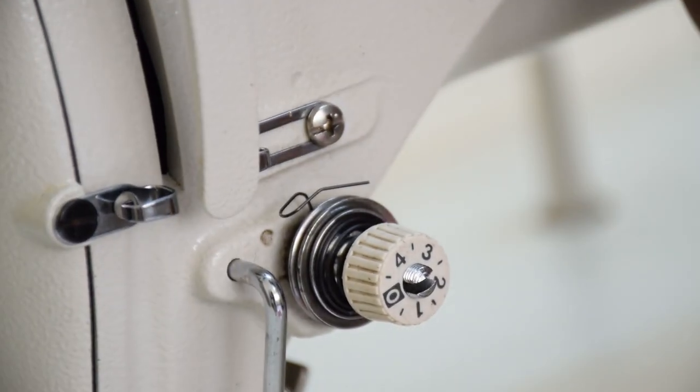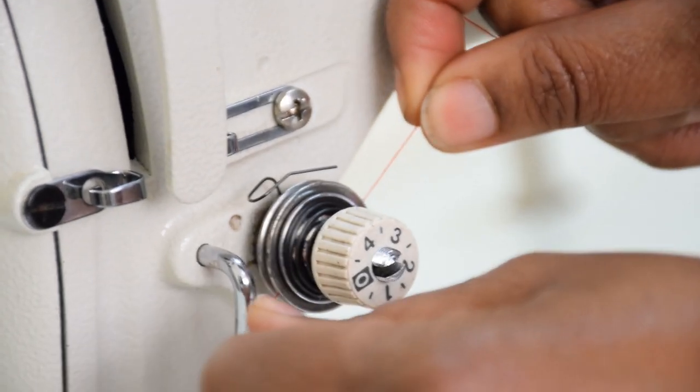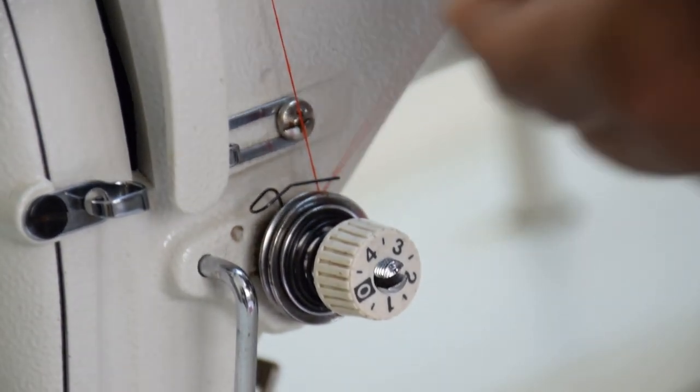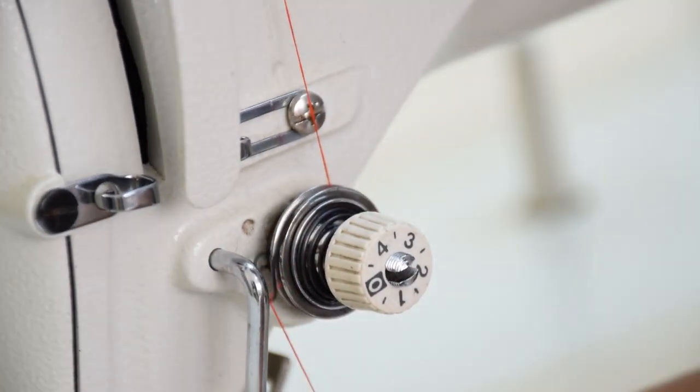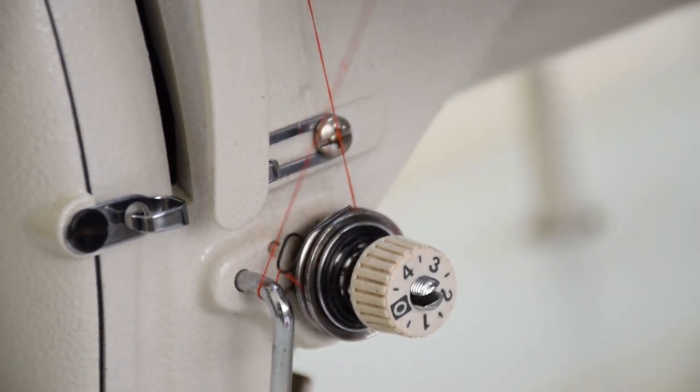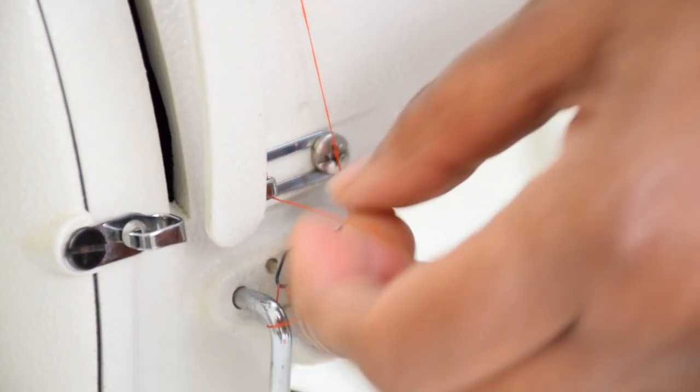Next, we go to the tension disc. Ensure your thread goes in between the tension disc, onto the leaf spring, and down, and up again, onto the thread guide there.